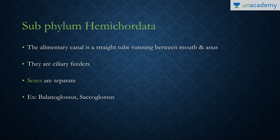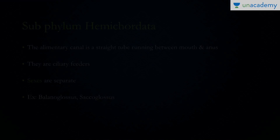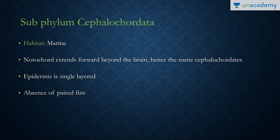The alimentary canal is complete with both mouth and anus. They are deuterostomic — meaning the blastopore converts to the anus. They are ciliary feeders and the sexes are separate. Important examples of this phylum are Balanoglossus and Saccoglossus.